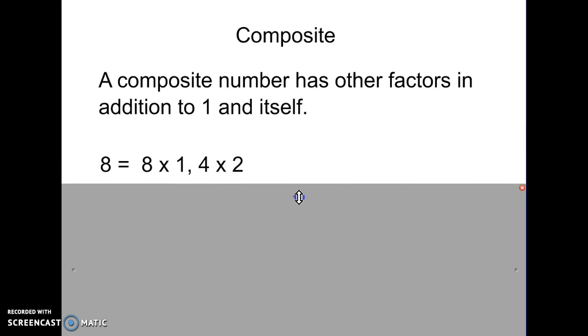So, 8. 8 times 1. Yep, so 8 and 1 are factors of 8. But also, 4 and 2 are also factors of 8. You can do 4 times 2 and get 8. So, it's a composite number. 8.